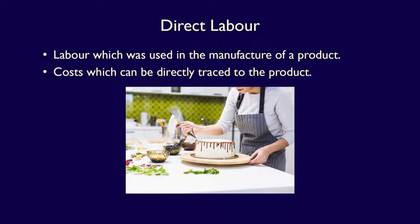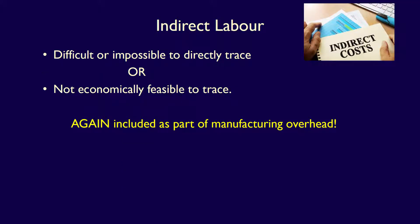Direct labour is the second category, made up of the cost of labour which can be directly traced to the production of the product. Similar to indirect materials, indirect labour either cannot be traced directly to the product or the cost is too small and therefore not worth tracing. Indirect labour is also part of manufacturing overhead, the third category of manufacturing costs.